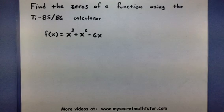Hello and welcome. In this example, I want to show you how to find the zeros of a function using the TI-85 or 86 graphing calculator. For the example problem, f(x) = x³ + x² - 6x. Let's grab our calculator so we can get it typed in and have it find the zeros.